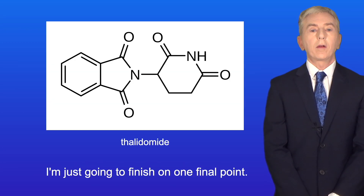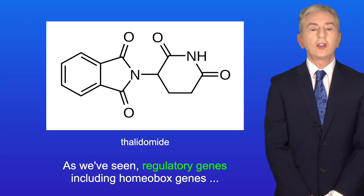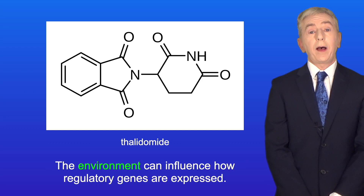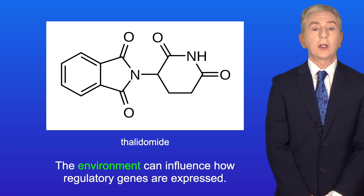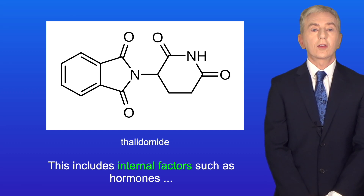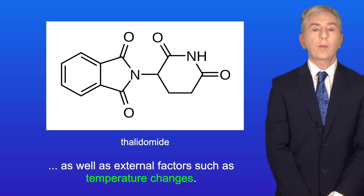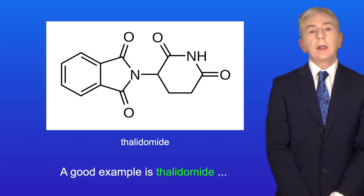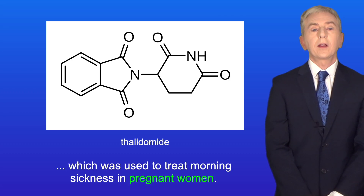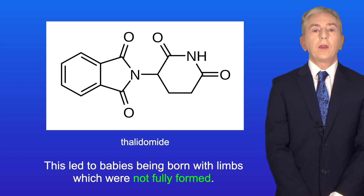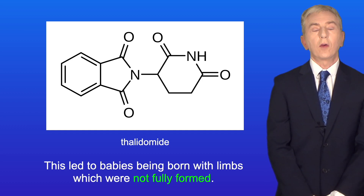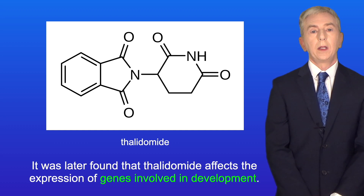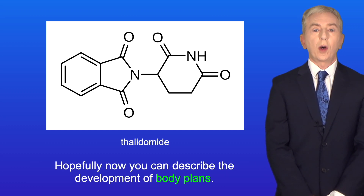Regulatory genes, including homeobox genes, play a critical role in the development of an organism. The environment can influence how regulatory genes are expressed. This includes internal factors such as hormones, as well as external factors such as temperature changes. Some drugs can also affect the expression of regulatory genes. A good example is thalidomide, which was used to treat morning sickness in pregnant women. This led to babies being born with limbs which were not fully formed. It was later found that thalidomide affects the expression of genes involved in development.